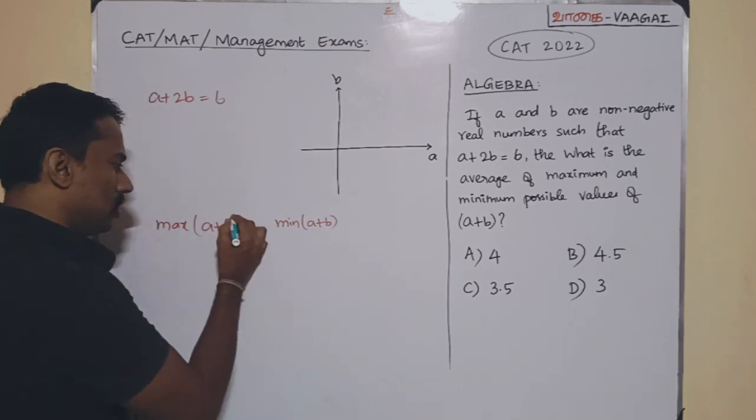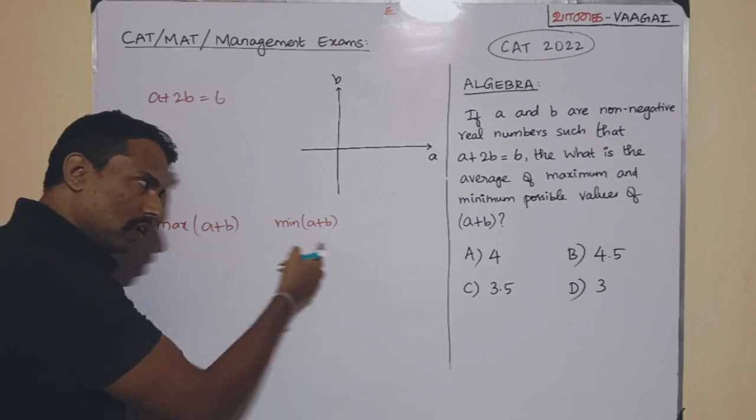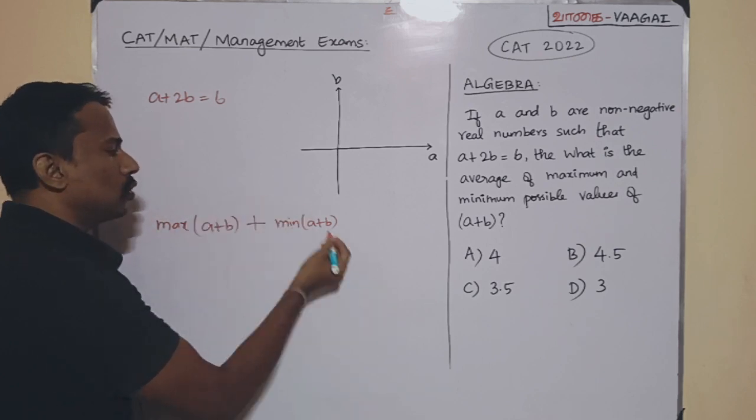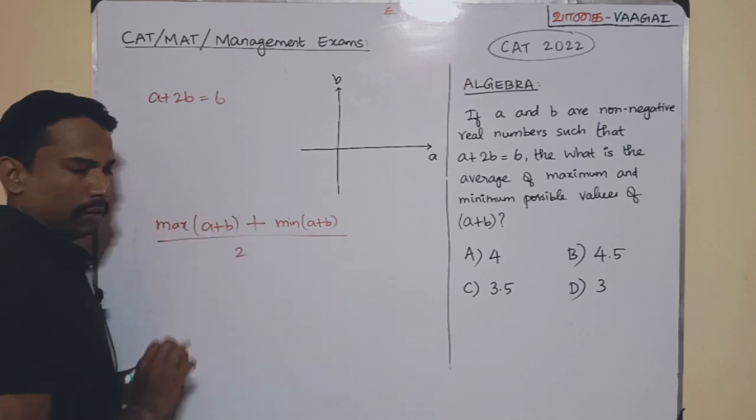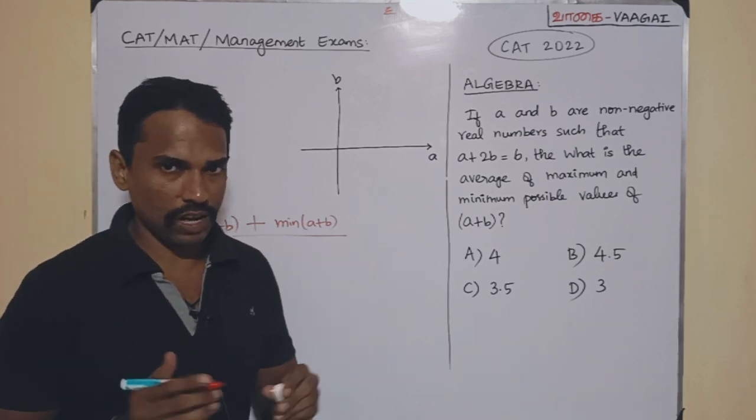These two values, max of A plus B and min of A plus B. If I want to find the average of these two values, this is like these two values added and the sum is divided by 2. So, finally, this is what we are supposed to find. Let us make the structure very clear.